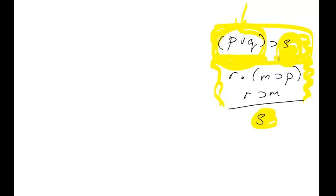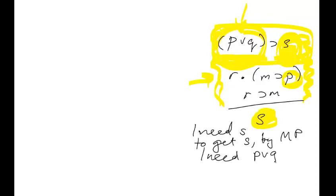So how do we get P or Q? Well, we look around. We don't see P or Q anywhere around here, right? So we don't have P or Q, but we do have P. Okay. So if we had P, then we know by the law of addition or the rule of addition that we can conclude P or Q. And if we have P or Q, then we can conclude S. So maybe we should write some of this strategy down here.